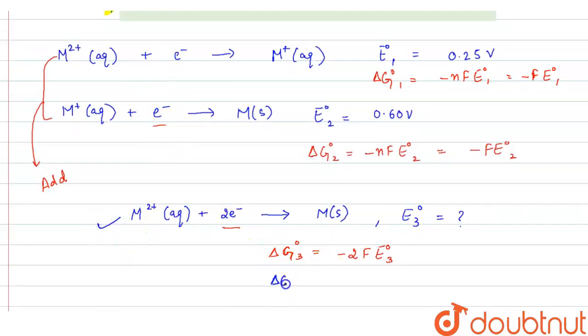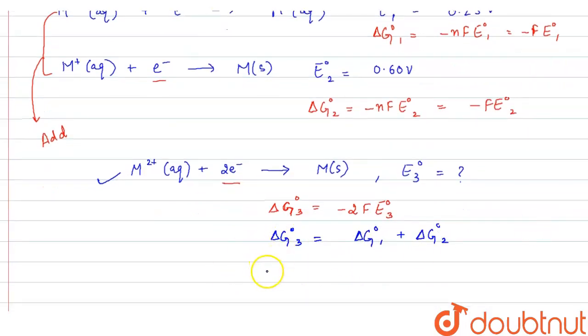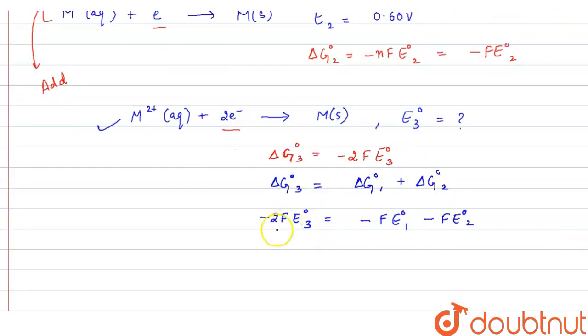So here the ΔG⁰₃ would be equal to ΔG⁰₁ + ΔG⁰₂. So when we put the values here, we have -2FE⁰₃, it would be equal to -FE⁰₁ - FE⁰₂. So F will be cancelled out and minus sign will be cancelled out.